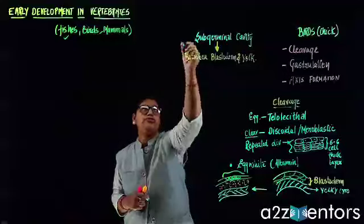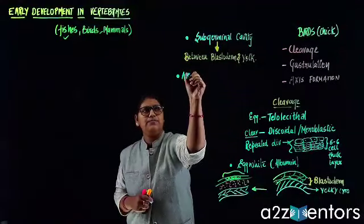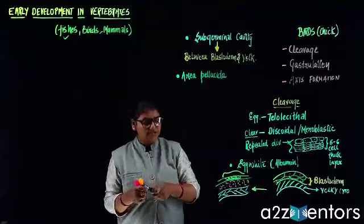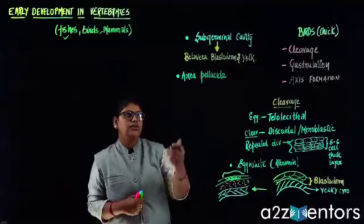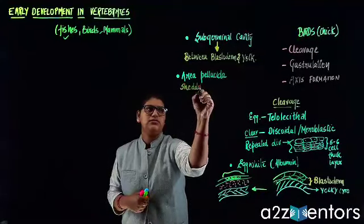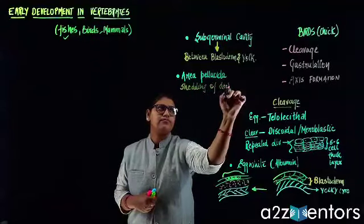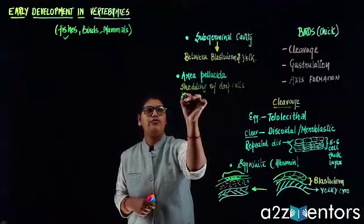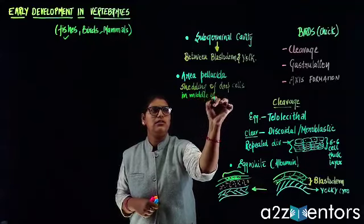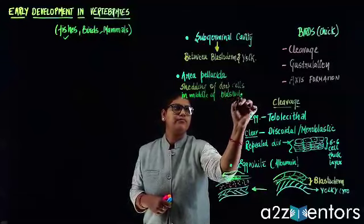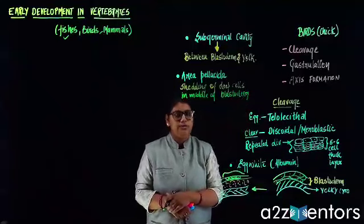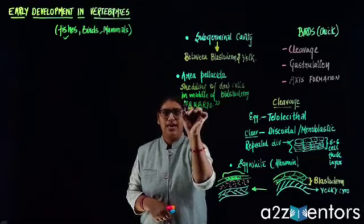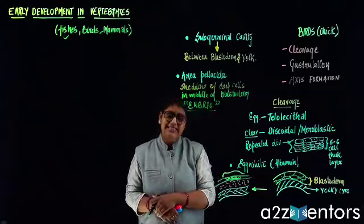Because of the shedding and sloughing off of these deep cells in the middle of the blastodermal region, you have formation of an area which is called area pellucida, which is going to form the embryo. So area pellucida is formed by shedding of deep cells in the middle of the blastoderm, and it contributes to forming the embryo.